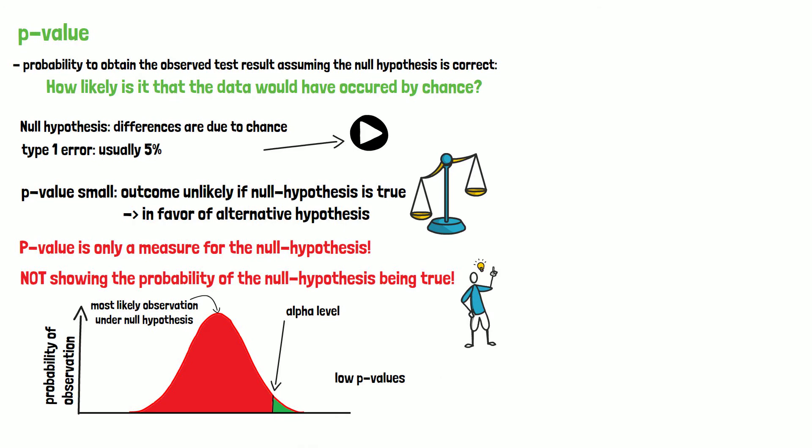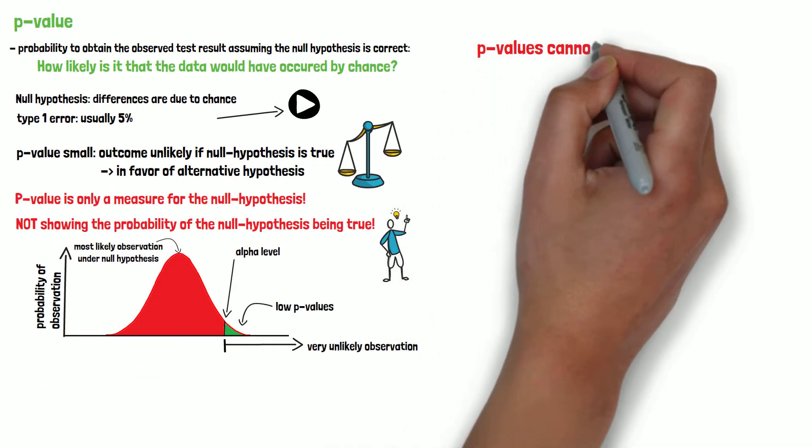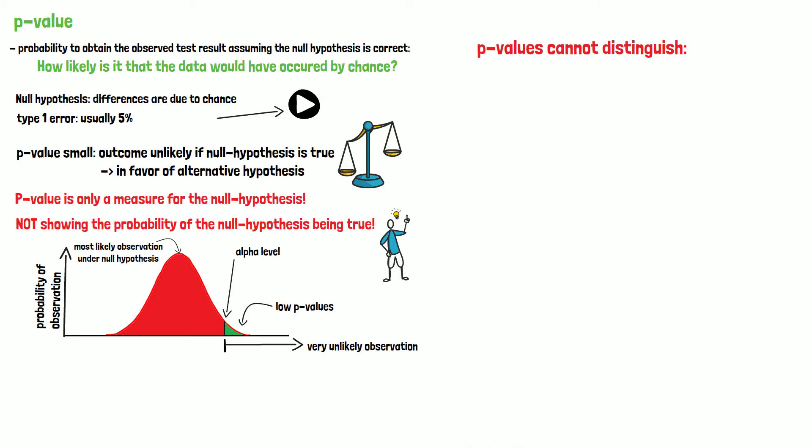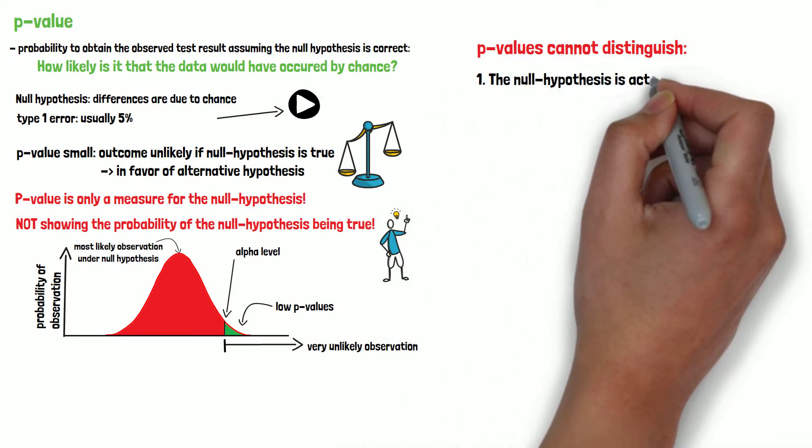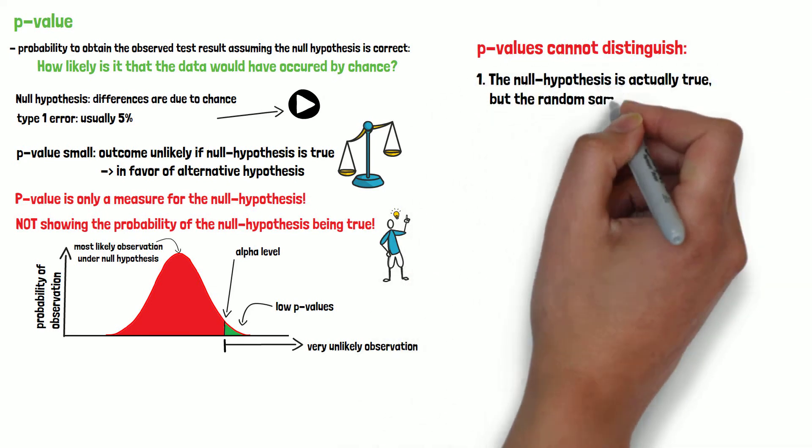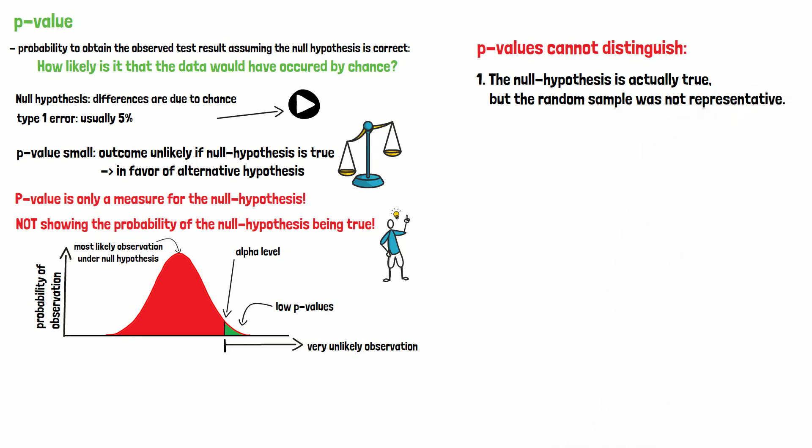So a low p-value indicates that the data observed is very unlikely under the assumption that the null hypothesis is correct. It cannot distinguish if this outcome is due to the fact that the null hypothesis is actually true but the random sample was not representative, or secondly the null hypothesis is wrong.